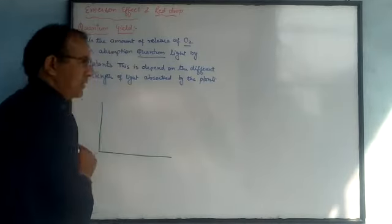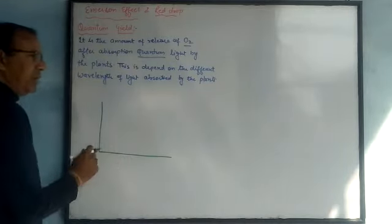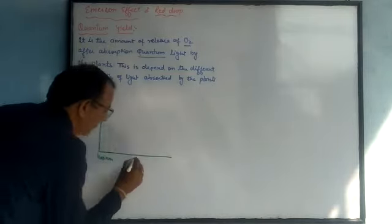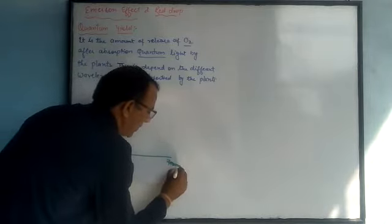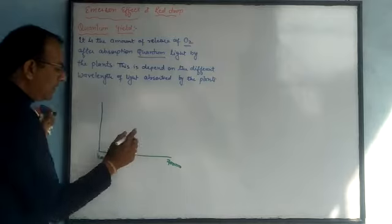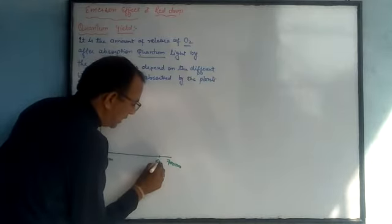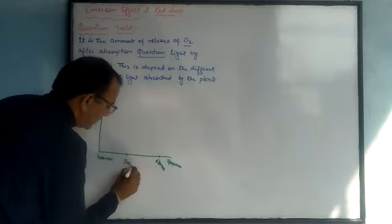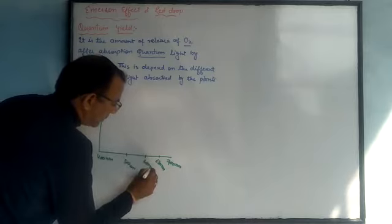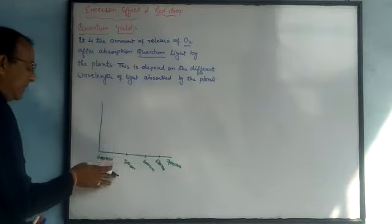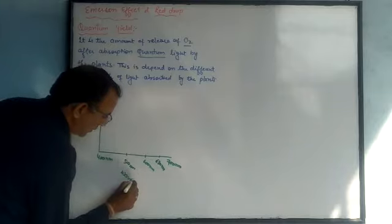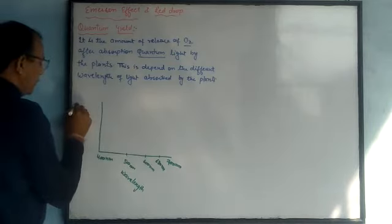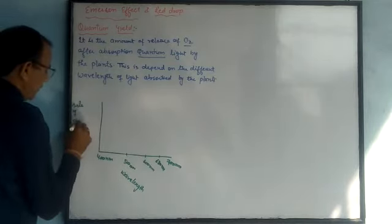In the graphical representation, the x-axis represents the wavelength of light, starting from 400 nm to 700 nm, because this is the wavelength range of visible light. Key points marked include 500 nm, 600 nm, 680 nm, and 700 nm. The y-axis represents the rate of photosynthesis.